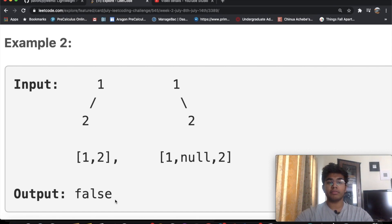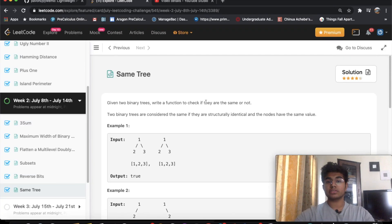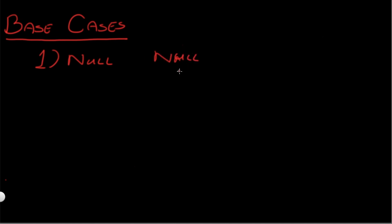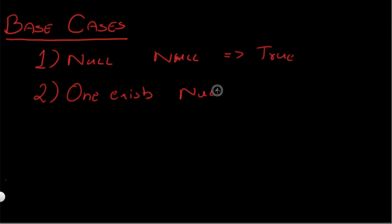To solve this, like most tree questions, we're going to use recursion. First we need to set a couple of base cases. The first base case is when both p and q are null — there's nothing in either tree, so we return true because two empty trees are still the same. The second case is when one of them exists while the other is null, in which case we return false.